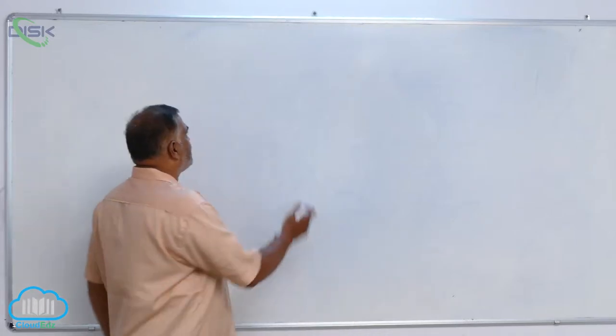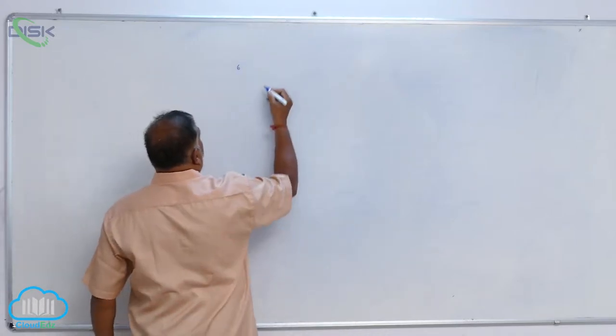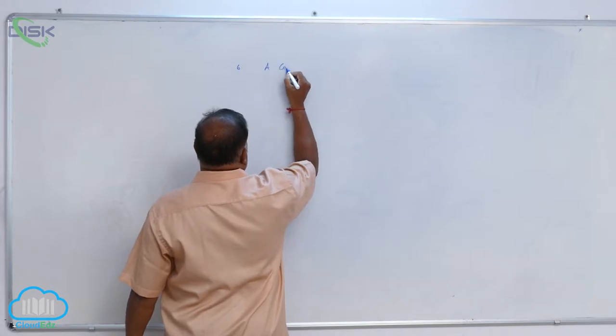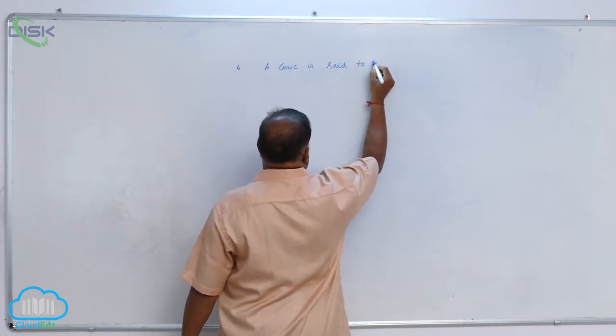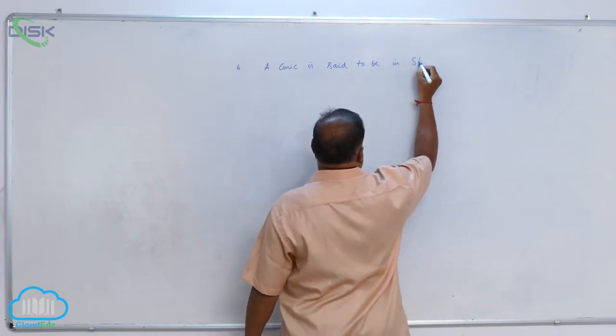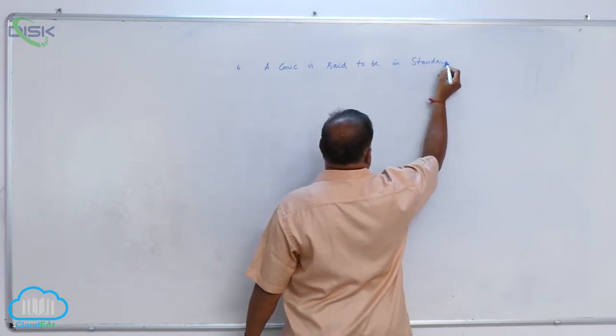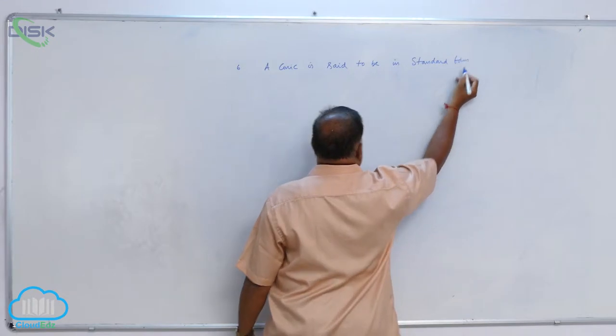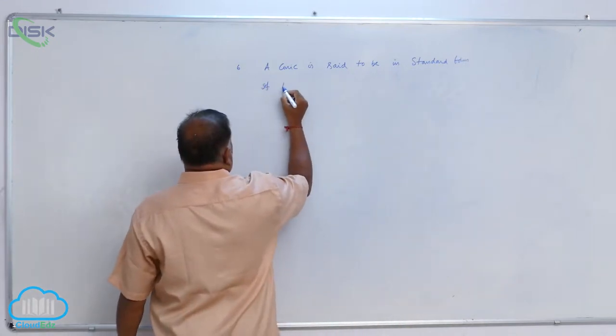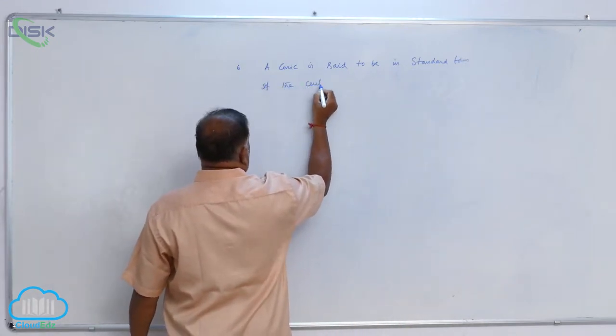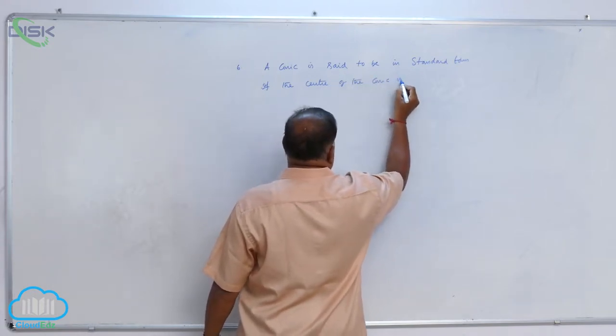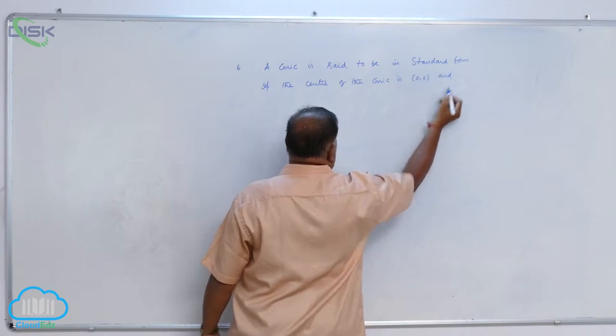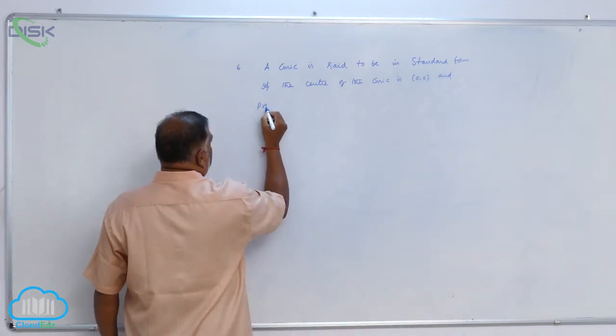Now one more point we need to discuss, point number 6: A conic is said to be in standard form if the center of the conic is (0,0) and the principal axis...